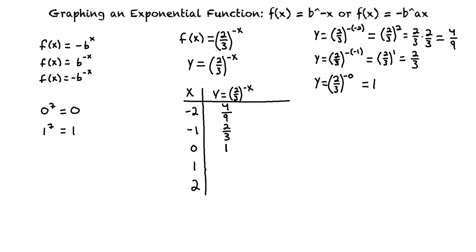Now let's find the y value when x equals 1. We see we have 2 thirds to the negative 1, but how do we solve for y when our exponent is negative and not positive? Well, we take 1 over the base value 2 thirds, and we can change the exponent from negative to positive as a result. This gives us just 1 divided by 2 thirds, which equals 3 halves.